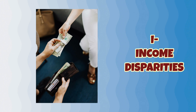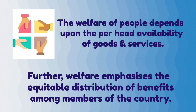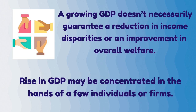I in DIRECT stands for income disparities. The welfare of people depends upon the per head availability of goods and services. Welfare emphasizes the equitable distribution of benefits among the members of the country. A growing GDP does not necessarily guarantee a reduction in income disparities or an improvement in overall welfare, because the rise in GDP may be concentrated in the hands of a few individuals or firms.